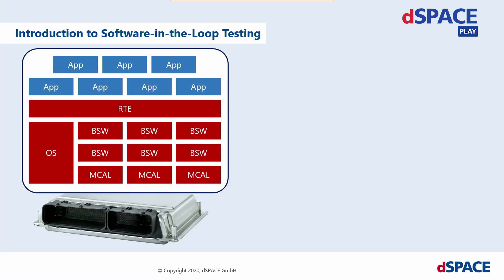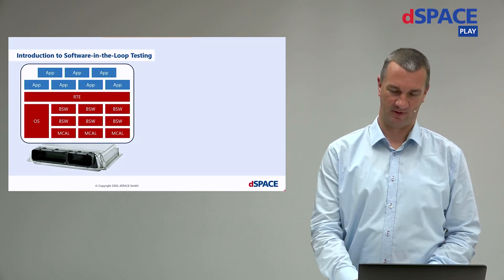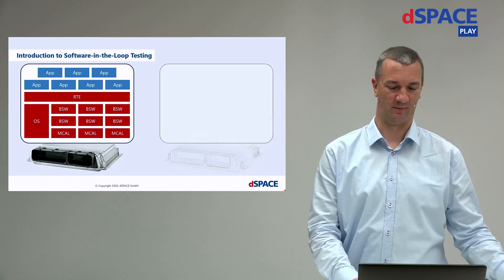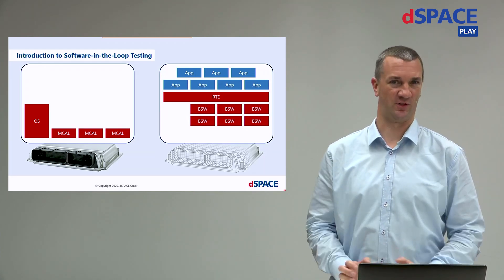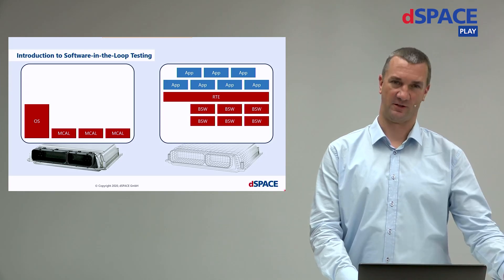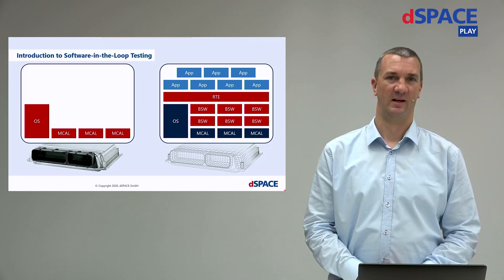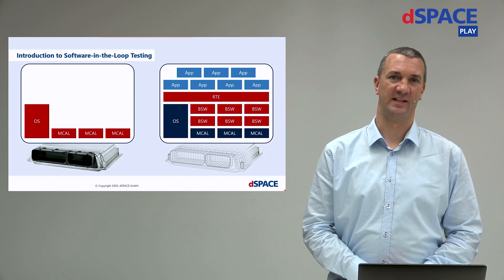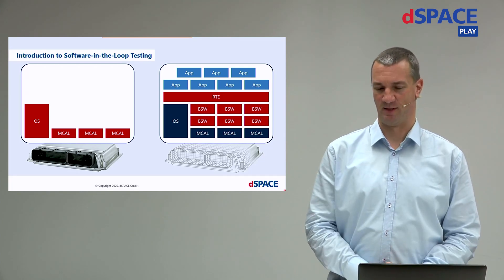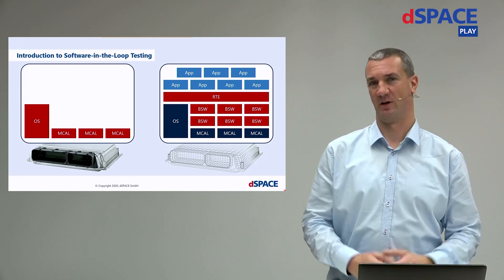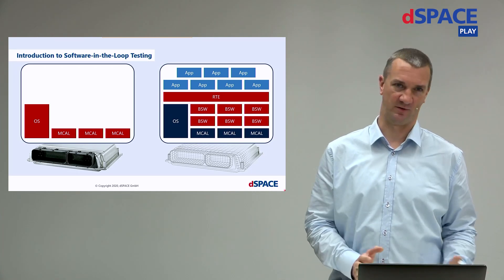What steps have to be done to get your SIL environment running? You want to test your software that is running on a real ECU, but without having the real hardware available. So you put the software components you want to test into a virtual component — a virtual ECU. To get that running in the SIL environment, you have to add or adapt some components that are dependent on the hardware. Depending on what you want to test, you have several abstraction layers available. For example, you can use just the application layer where your algorithm is, or you can use additional basic software components if you want to test, for example, the communication between several ECUs.